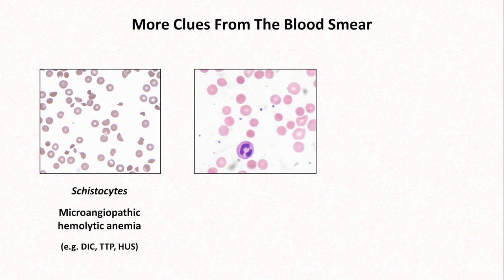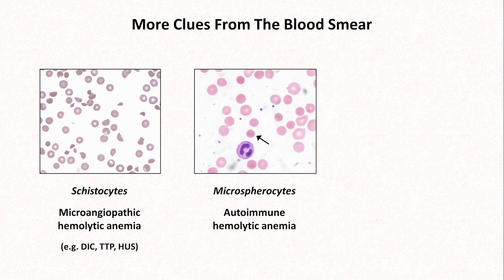This smear contains many microspherocytes, characterized by their small size and lack of central pallor, meaning that instead of having a normal biconcave disc shape, some of these erythrocytes are spheres. This is typical for autoimmune hemolytic anemia. Spherocytes — not necessarily microspherocytes, but spherocytes in general — are also classic for hereditary spherocytosis.